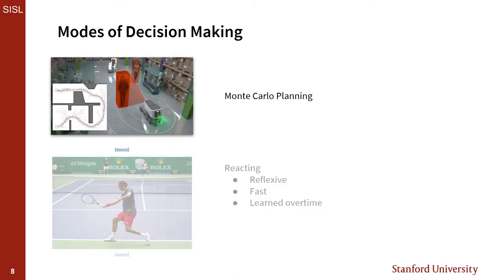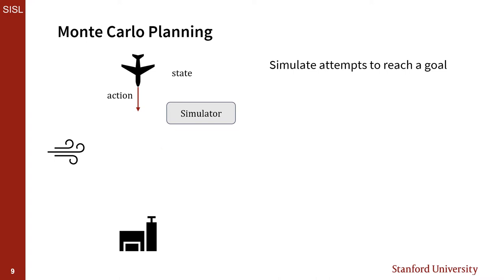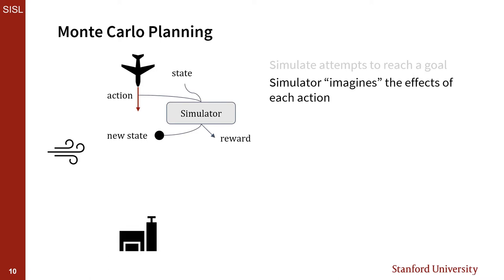The analog to chess-type planning that we'll consider are a class of methods called Monte Carlo planning. These methods attempt to replicate deliberate chess-type planning through use of an environment simulator. To understand this, consider an aircraft in the north that we control by taking actions to lead to an airstrip in the south. We tell the simulator our current state and an action to consider. The simulator imagines the effects of that action and tells us the new state, along with a reward—a signal of how good or bad that action from that state was. In our example, the reward might be the amount of fuel it took to reach the new state.